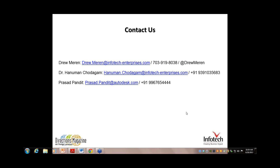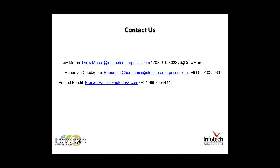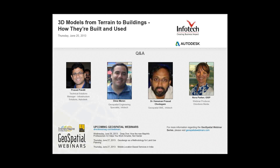Drew, this one goes to you: what commercial off-the-shelf software packages can we use for 3D modeling? Drew answers: there are several — AutoCAD, MicroStation, Google SketchUp, Socet Set, Socet GXP, Esri CityEngine, 3D Studio Max, as well as all the Autodesk products that Prasad mentioned. They vary in degree and cost. The technology and available software is very readily available today. There are also open source platforms available for toggling between different software and showcasing for visual aids.